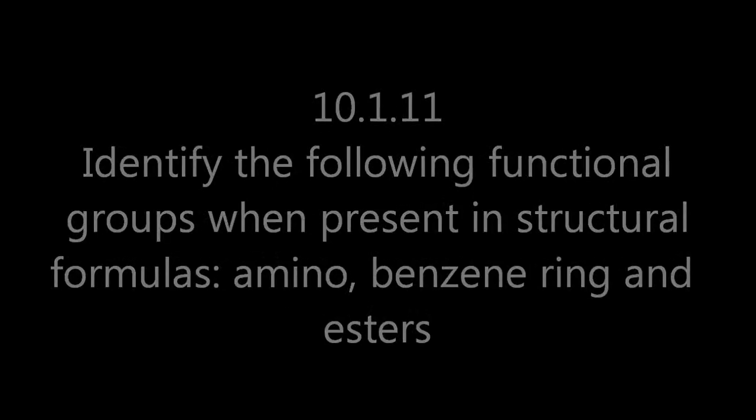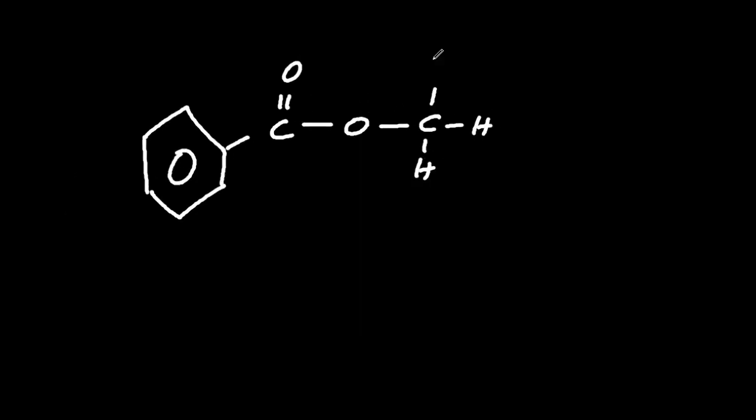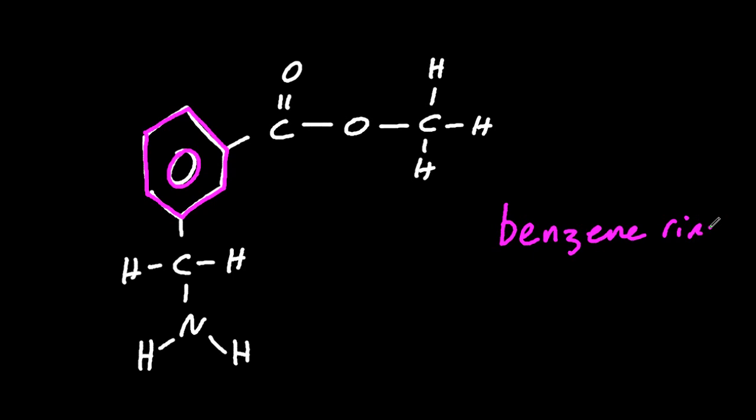All right, let's see if we can find these three groups. So let me draw out this rather unlikely molecule. You can see that if there's a hexagon with a circle, that's a benzene ring, which is really six carbons in a hexagon with single and double bonds attached. It also looks like that, with three little lines.